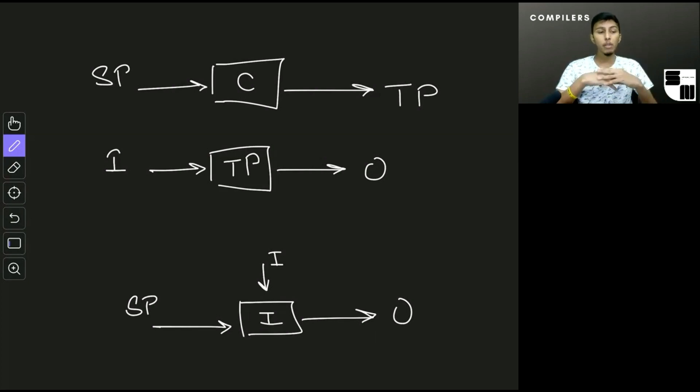But the primary advantage with an interpreter is its portability. So because we're not creating any architecture specific target program, we could use the same source program on different machines and run an interpreter on that machine to get the output. So that's about compilers and interpreters.